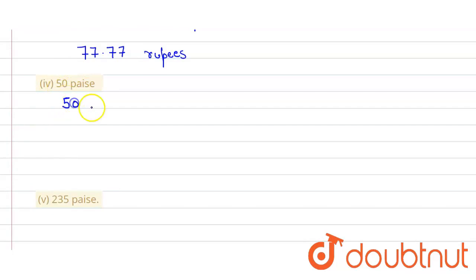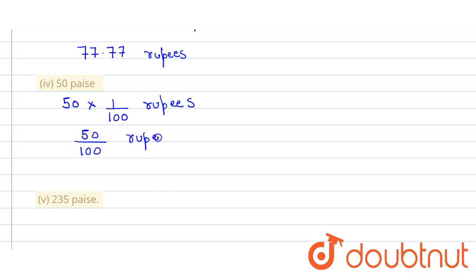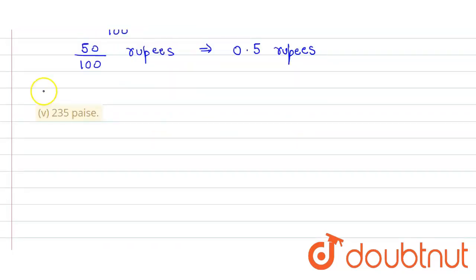The fourth part is 50 paise, which is 50 divided by 100 rupees, giving us 0.5 rupees. Similarly, the fifth part is 235 paise, which is 235 divided by 100 rupees, and when we divide we get 2.35 rupees.